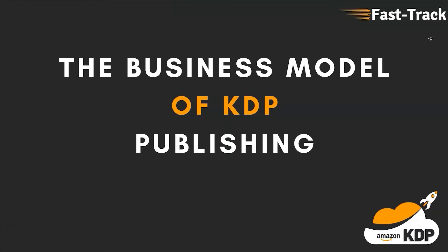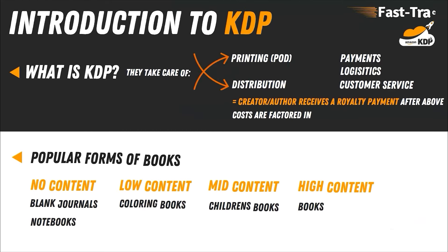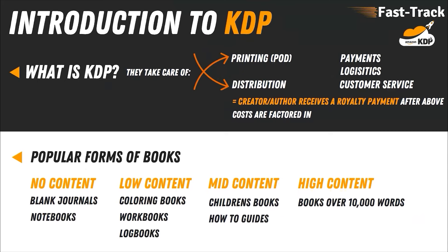I want to use this lesson to discuss the business model of KDP, or Kindle Direct Publishing. KDP is a platform that allows you to create and publish books using a print-on-demand service, or POD. Print-on-demand means your books aren't sitting in bulk anywhere — as soon as a customer orders a book, it is printed that day or the next and shipped to the customer. They hold the digital asset — your files — and once ordered, the book is printed. They also take care of distribution, payments, logistics, and customer service including returns.